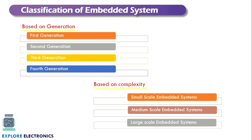The next topic is classification of embedded systems — how to categorize them. The first basis is generations, similar to how mobile network generations evolved from 1G to 2G, 3G, 4G, and now 5G. Similarly, embedded systems are categorized as first, second, third, and fourth generation, with improvement in performance at each stage. We can also categorize by complexity: small scale, medium scale, and large scale embedded systems.